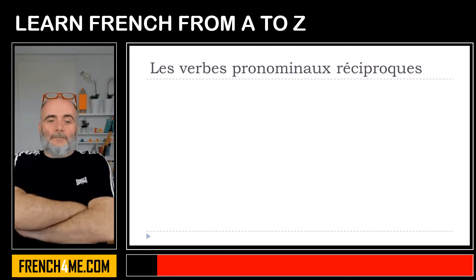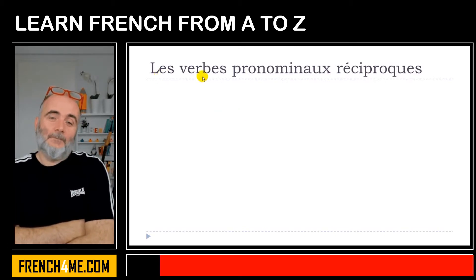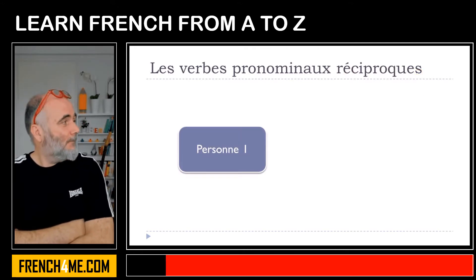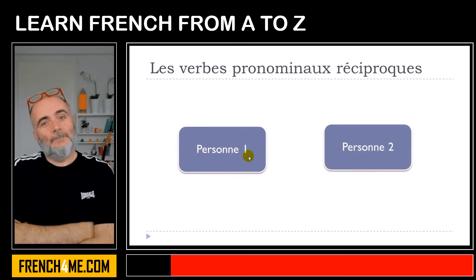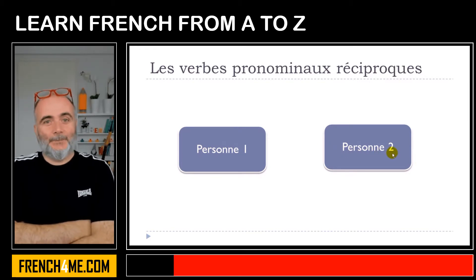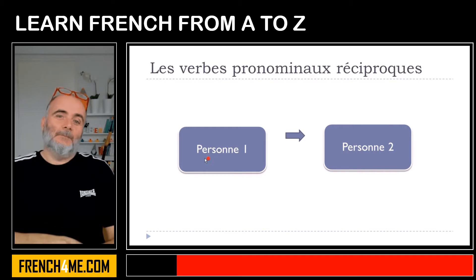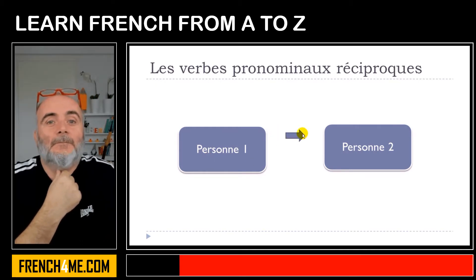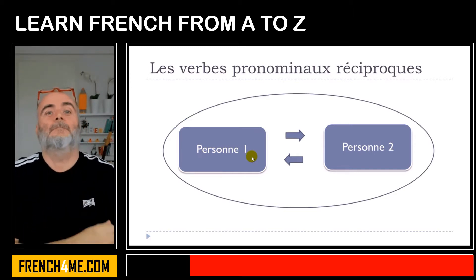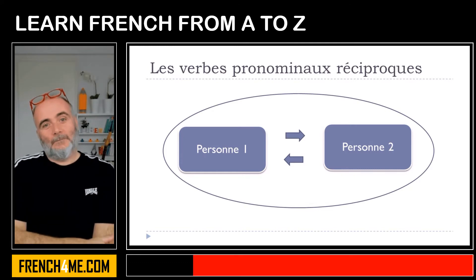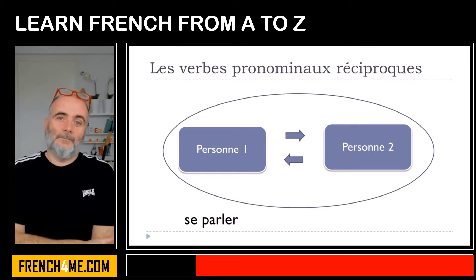So let's start. The good question we could ask is: what are les verbes pronominaux réciproques? The first thing you should keep in mind is that you will need two persons — la personne numéro 1 and la personne numéro 2. The concept is that la personne numéro 1 will do something that affects la personne numéro 2, and la personne numéro 2 will do something that affects la personne numéro 1. This is what we call les verbes pronominaux réciproques.